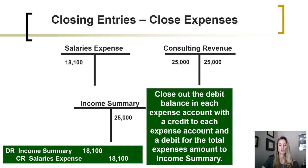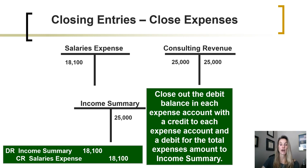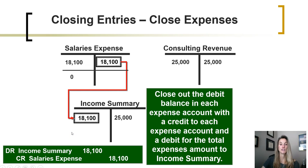The second step is to close out the expenses. We have one expense account that we need to close out, and that expense account has a debit balance. So to close it out, we are going to credit the salaries expense account for its balance of 18,100. We will transfer that balance into our income summary account for the total amount of the expenses. In doing so, the salaries expense account is now zero, and the summary of the expense transactions has now been transferred into income summary.